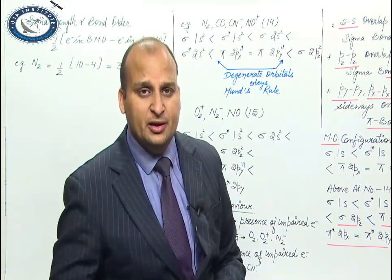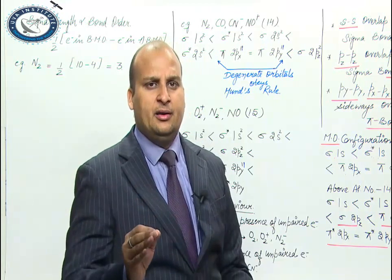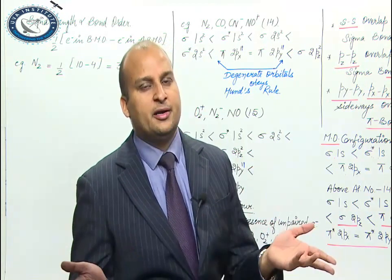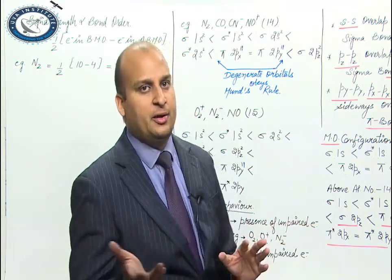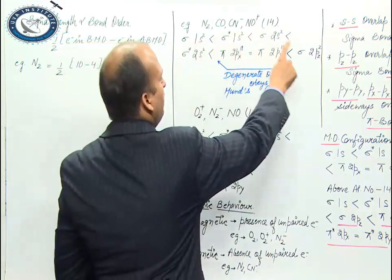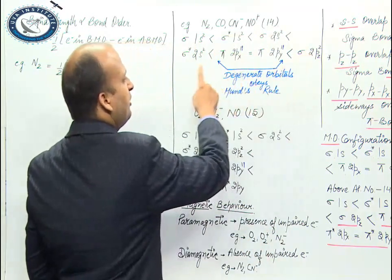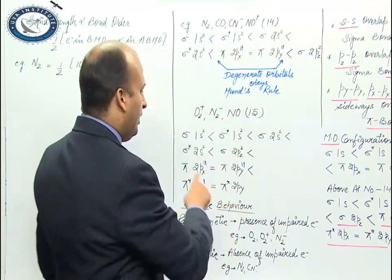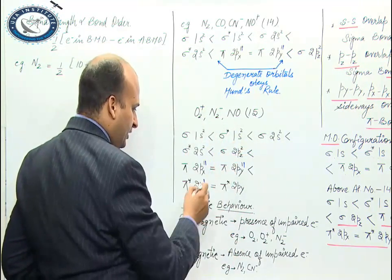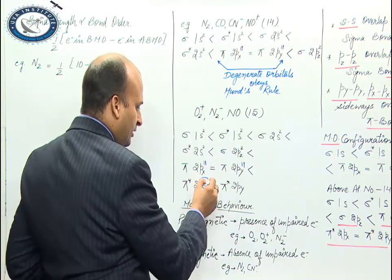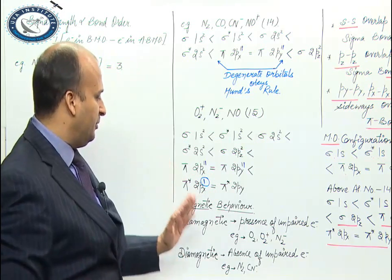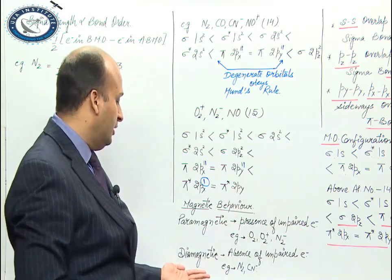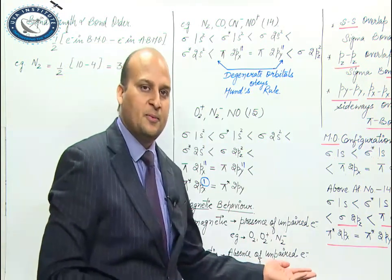Now let's discuss magnetic behavior — it's very simple. If there are unpaired electrons, the molecule is paramagnetic. If there are no unpaired electrons, it is diamagnetic. For N2, there are no unpaired electrons anywhere, so it is diamagnetic. For the other example (with unpaired electrons visible), it is paramagnetic. Paramagnetic = presence of unpaired electrons; diamagnetic = absence of unpaired electrons.